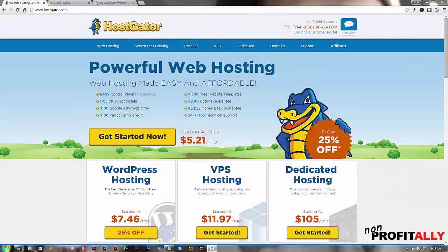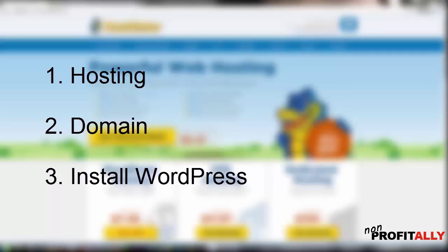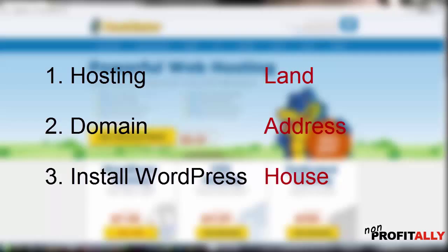Alright, let's go ahead and get started. In order to get a website built and live on the web, we have to start with getting our hosting, we have to get a domain, and for our purposes we're going to be installing WordPress to build our website. You can think of it like building a home — first you need some land, then you need your address, and then you need your house. Your hosting is your land, it's your space that you're going to put your house on. Your domain is your address to where your house is located.